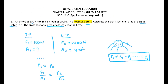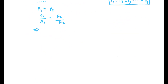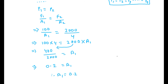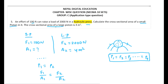F1 is 100 newton and we have to find A1. F2 is 2000 newton and A2 is 4 meter square. Applying cross multiplication: 100 × 4 = 2000 × A1, so 400 = 2000 × A1, therefore A1 = 400/2000 = 0.2 meter square. This is the required cross-sectional area of the small piston.